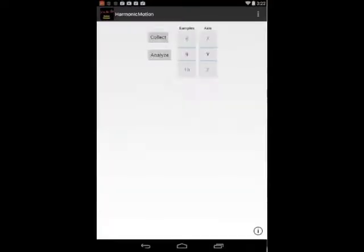When the Harmonic Motion app is opened, there are some choices to make. First is to choose how many data points will be used in the second part of the experiment. The other is to choose which axis will be the oscillation axis.